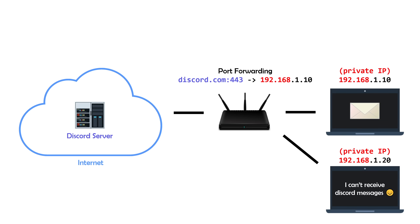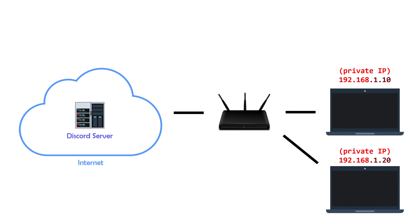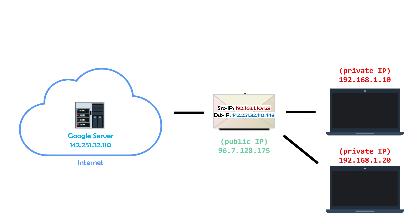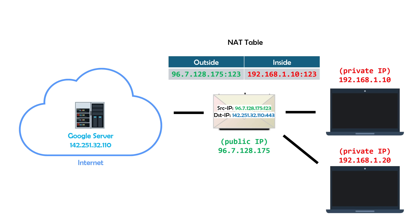But what if you want to have multiple devices on your network all be available to receive traffic from the same source? It would be quite silly if only a single computer at a time could receive Discord messages. The solution that is most commonly used — that you're likely using right now to receive this video feed — is called NAT, or Network Address Translation. When a private device sends a packet out to the internet, the router will swap out the private source IP and port number on the packet, and replace it with the router's own public IP. The port number will usually remain the same, but may be incremented if it is already in use. The router keeps track of this mapping of private to public IPs and port numbers in something called a NAT table.